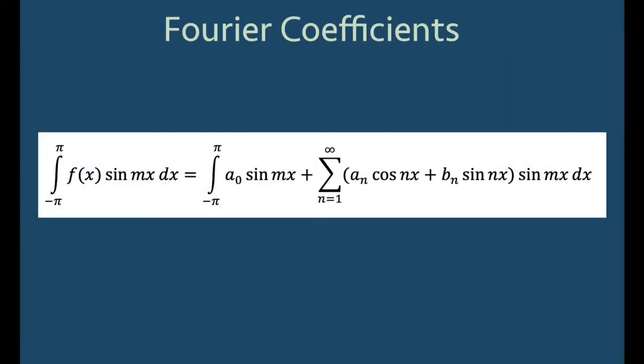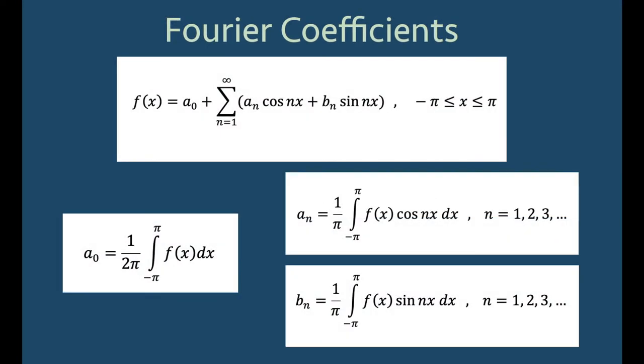And finally, if we multiply both sides of the equation for f(x) by sin(mx) for an integer m greater than or equal to 1, and then integrate over the interval from negative pi to pi, we get the coefficient bn = 1/π times the integral from negative pi to pi of f(x)*sin(nx) dx, where again n = 1, 2, 3, etc.